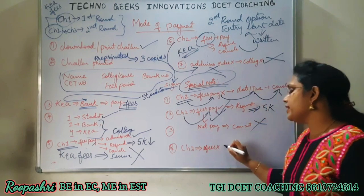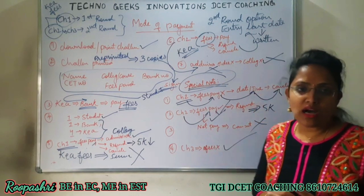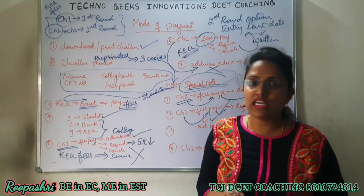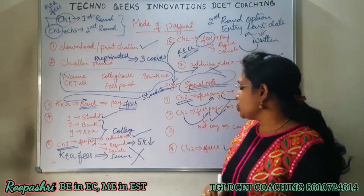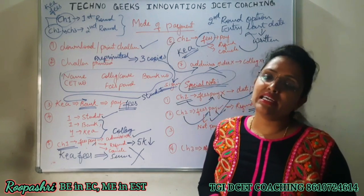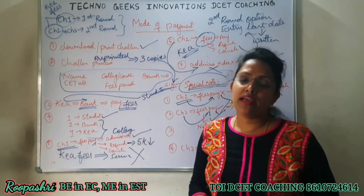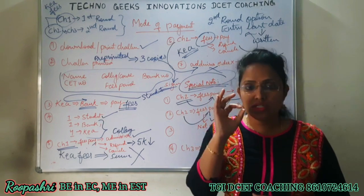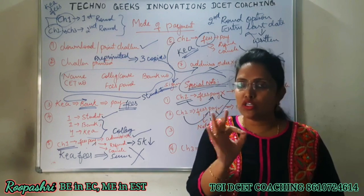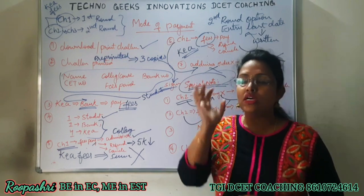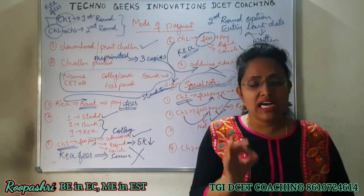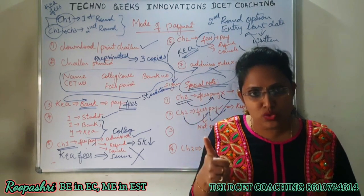If you paid fees once and on that date it doesn't happen, your information won't be updated, your complete amount will be cancelled - loss will happen, and your seat too will be cancelled. For those who clicked choice 3, there is no necessity to pay fees to K.E.A. at all. So for those who click choice 4, they will completely exit the DCET process.